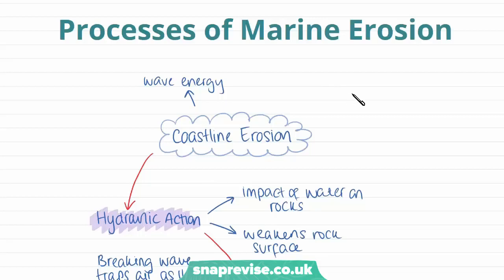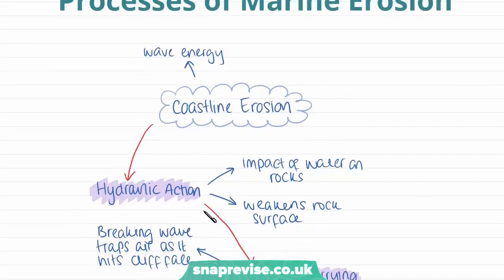Firstly, we're going to look at processes of marine erosion — those caused by the sea through waves, tides, and currents. Looking at coastline erosion, we'll start with hydraulic action. Hydraulic action is simply the force or impact of the water on rocks — the pressure when waves hit the rocks — and this can help to weaken the surface of the rocks.